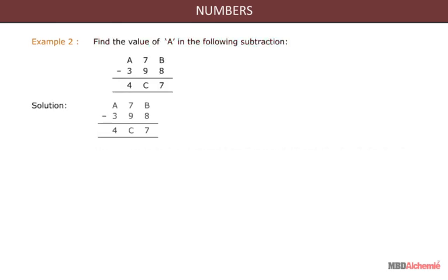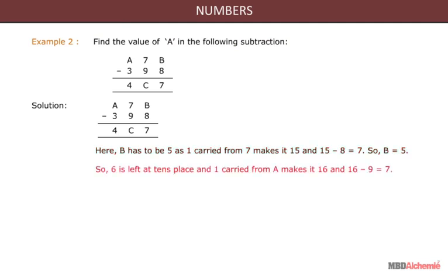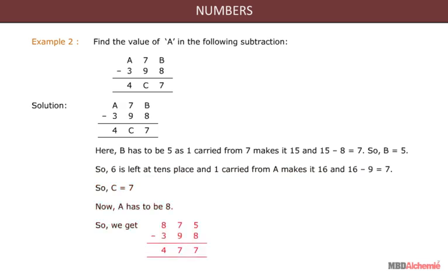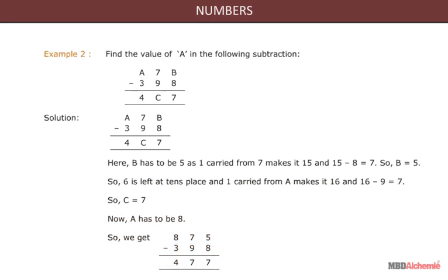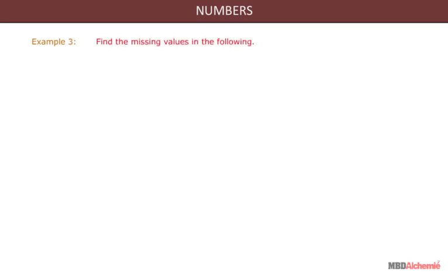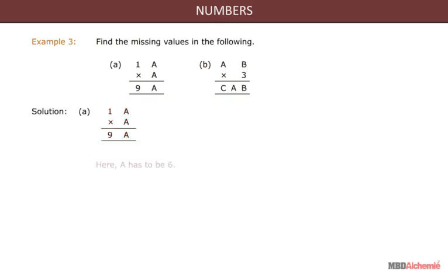Consider the second example: find the value of a in the given subtraction. Here b has to be 5, as borrowing 1 from 7 makes it 15, and 15 minus 8 equals 7, so b equals 5. Therefore 6 is left at the tens place, and borrowing 1 from a makes it 16, and 16 minus 9 equals 7, so c equals 7. Now a has to be 8, giving 875 minus 398 equals 477.